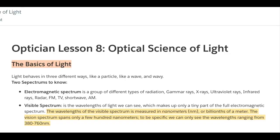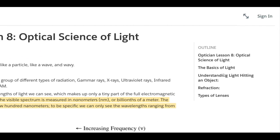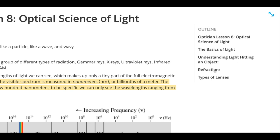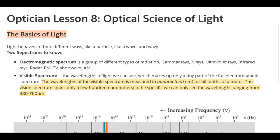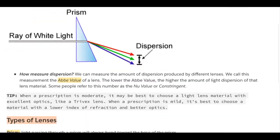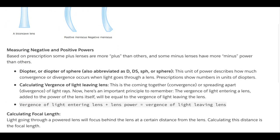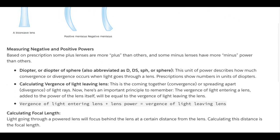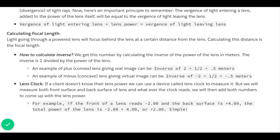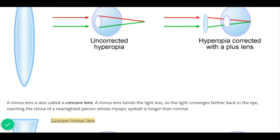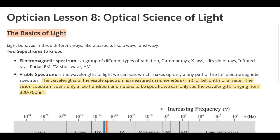In this lesson we learned a lot about light: understanding light hitting an object, refraction, types of lenses, convergence and divergence — vergence — and how to calculate vergence and focal length, which is the inverse of the power of a lens. If you like this lesson, please leave a thumbs up, and for future optician lessons please subscribe. The text notes for this video will be in the link in the description.